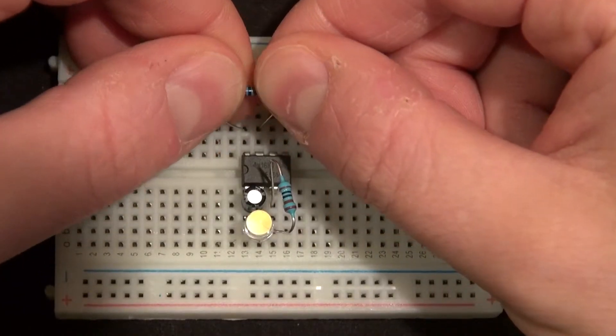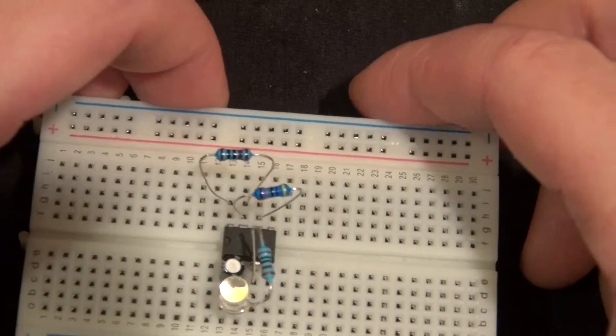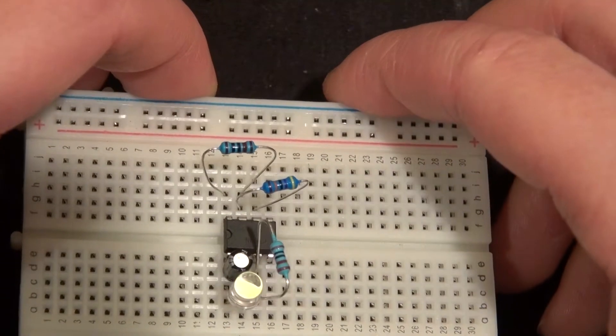Take another 1k ohm resistor and connect it to pin 8 and 7. You have a 470k ohm resistor between pin 6 and 7, just like that.